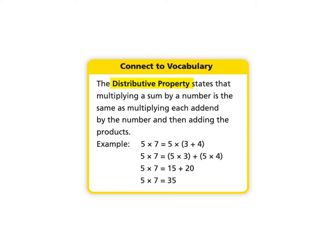They give an example here of 5 times 7. You'll notice that the 7 is broken into 3 plus 4, and this is a strategy to help make numbers that are easier to multiply. Then we create parentheses of 5 times 3 and 5 times 4, because 5 needs to be multiplied by both numbers. We write their products and then add them to get the answer of 35.